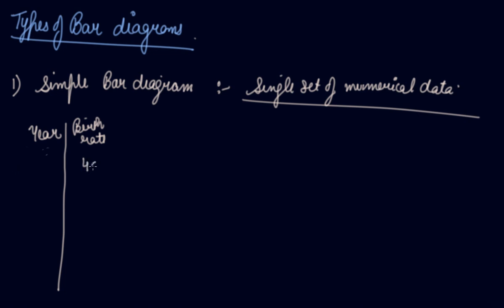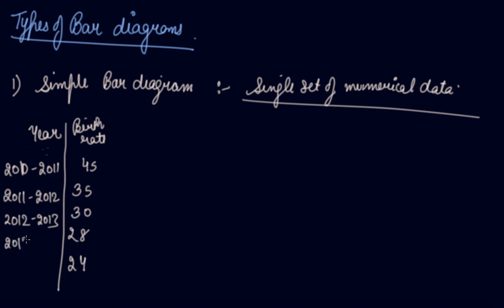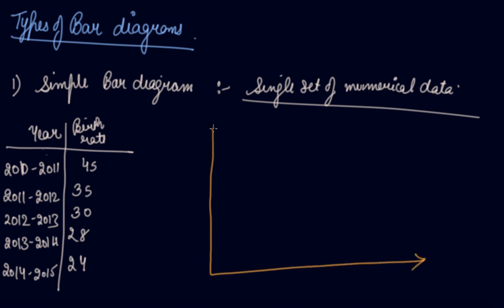I am given the birth rates 45, 35, 30, 28, 24 and the years are 2010, 2011, 2012, 2013, 2014. So these are the years and these are the birth rates. So we can draw the bar diagram. Here we can take the birth rate on the Y-axis and the year on the X-axis.